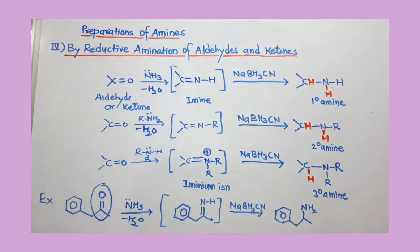In this way, you can produce primary amine, secondary amine, and tertiary amine by reductive amination of aldehydes and ketones.